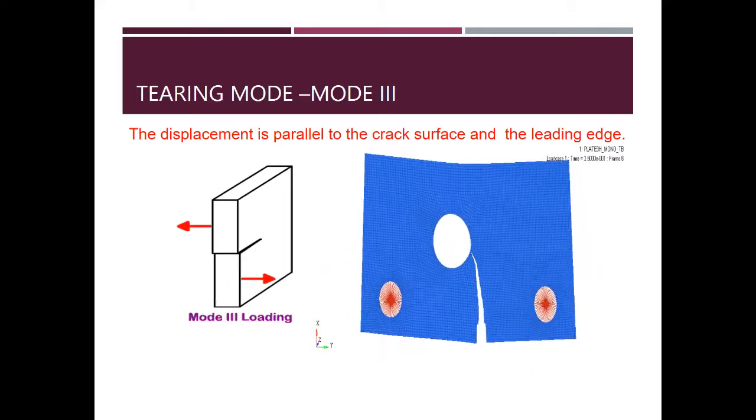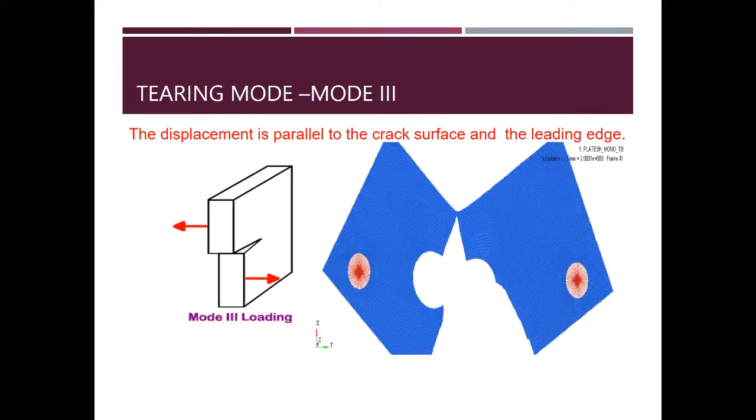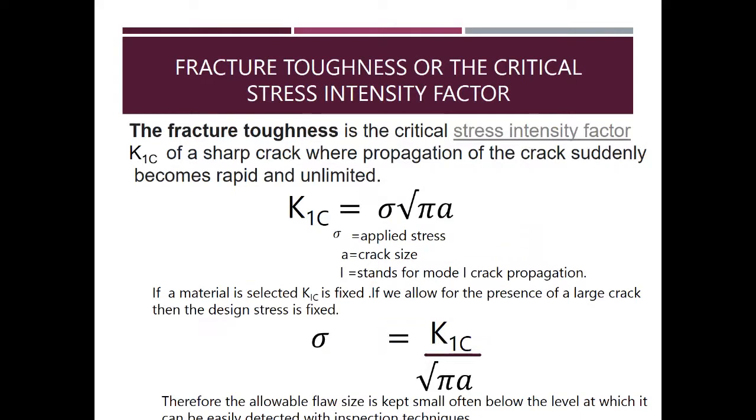The fracture toughness is the critical stress intensity factor K1C of a sharp crack where propagation of crack suddenly becomes rapid and unlimited. So K1C equals σ√πa is the famous mathematical equation, where σ is the applied stress, a is the crack size, and 1 stands for mode 1 crack propagation.